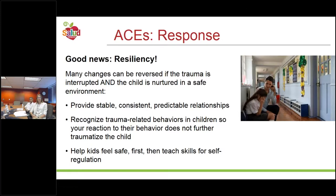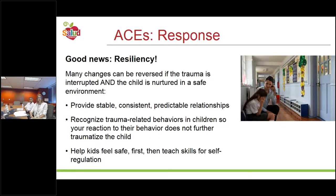The good news is that children are resilient, but resilience only exists in the adults around them who help build it. Relationships are definitely a buffer and help build resiliency. For adults, it helps to provide stable, consistent, predictable relationships; to recognize trauma-related behaviors in children; and to recognize their own reactions so they don't further traumatize or isolate the child. It's important to help kids feel safe first, and then teach skills for self-regulation or other academic skills.